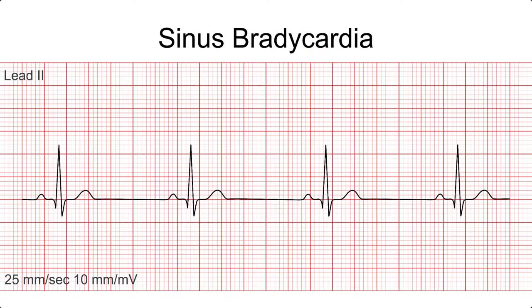Next, let's talk about sinus bradycardia and sinus tachycardia. With a sinus brady rhythm, it will look exactly like a normal sinus rhythm with one exception: the heart rate will be less than 60 beats per minute. You measure that rate by calculating the distance between the QRS complexes. When the rhythm is regular, the heart rate is calculated by taking 300 divided by the number of small squares between the QRS complexes. For example, if there are four small squares between QRS complexes, the heart rate is 300 divided by 4, which equals 75.